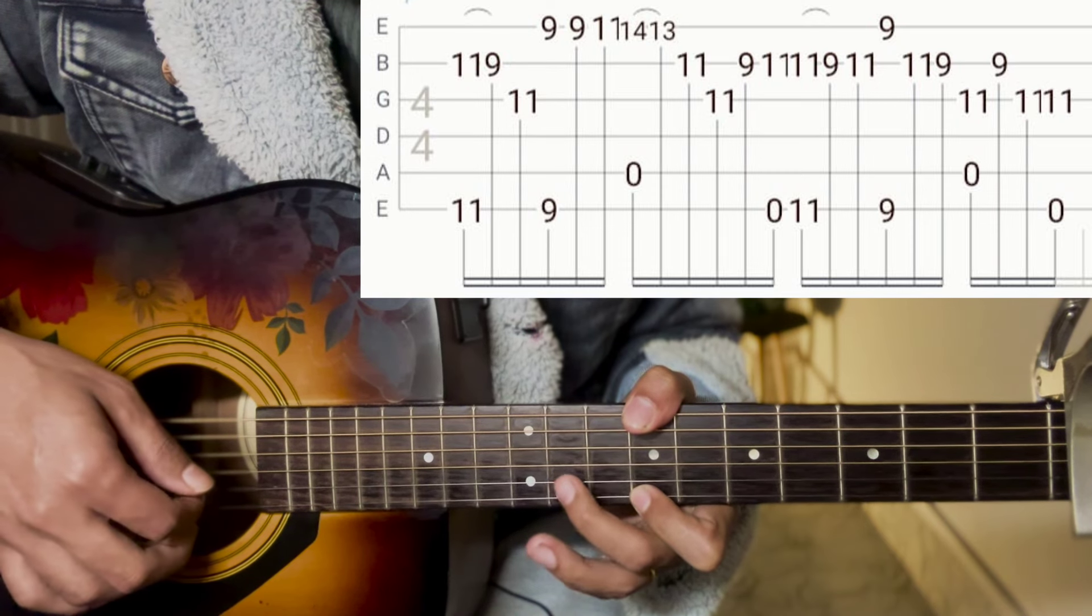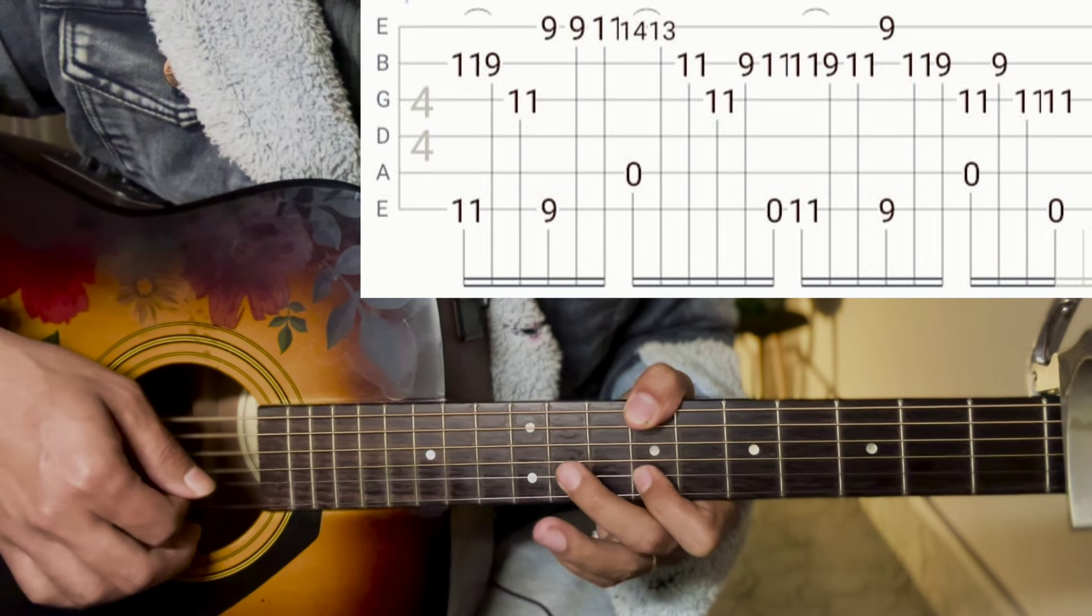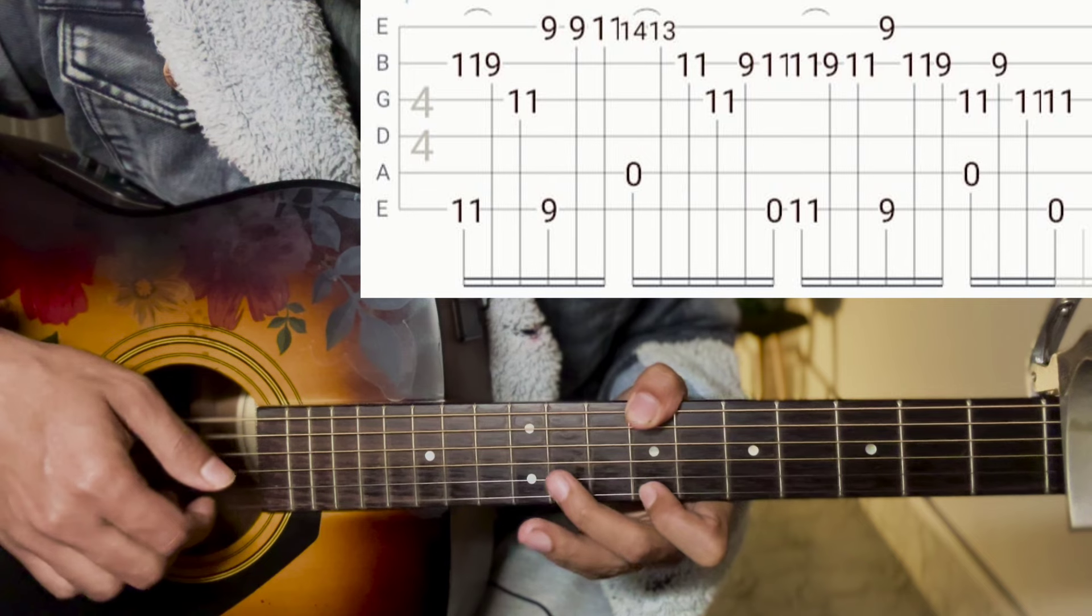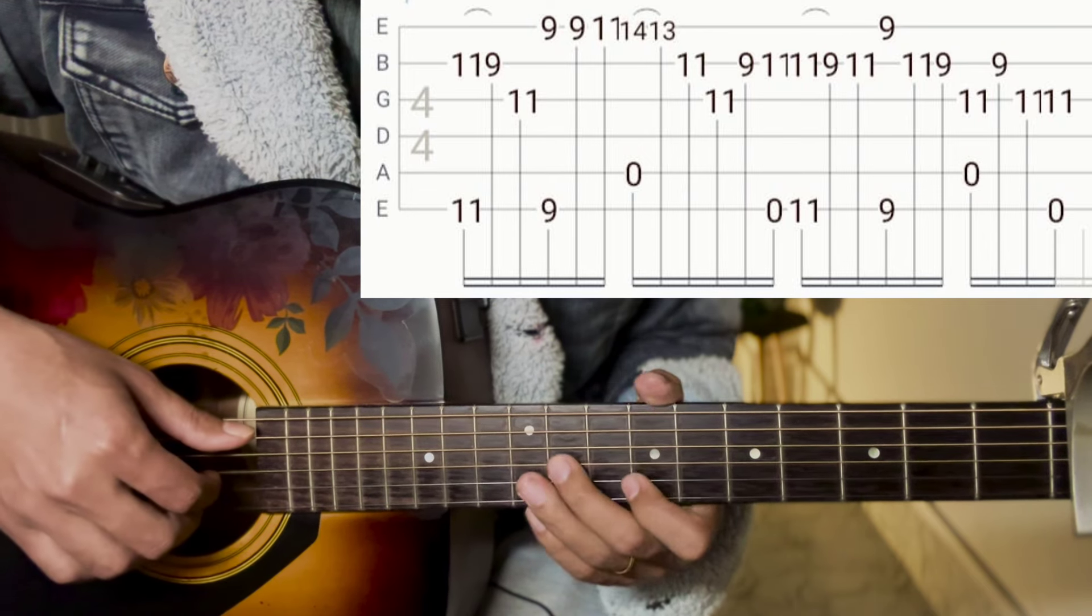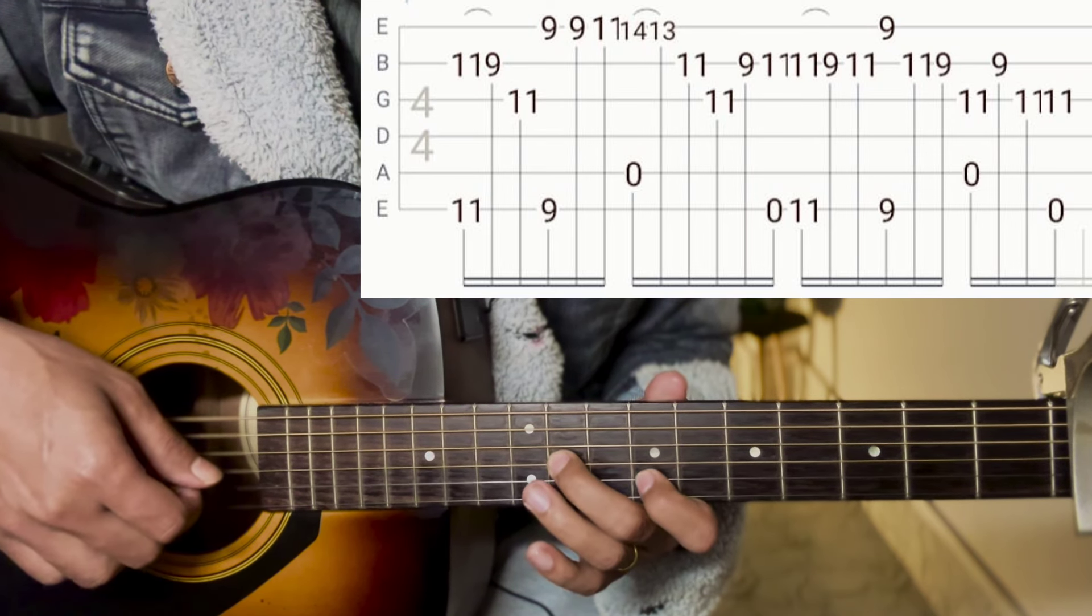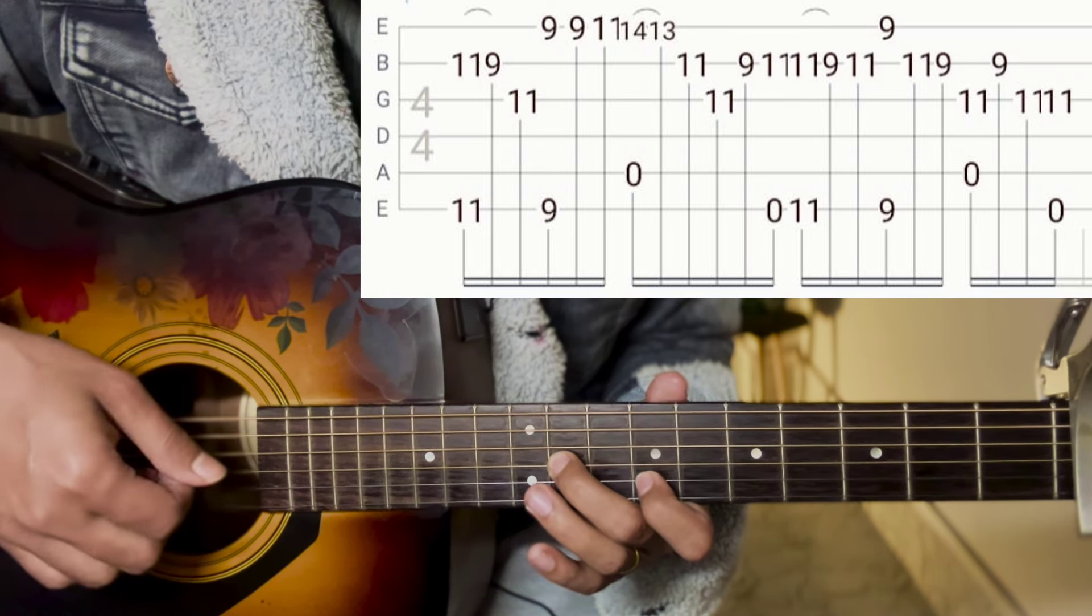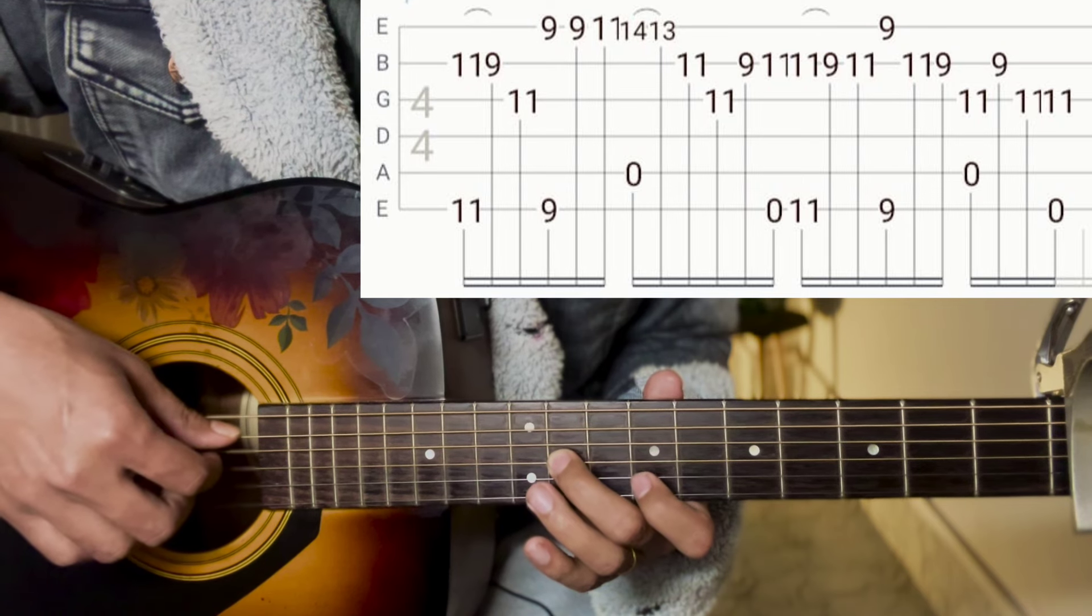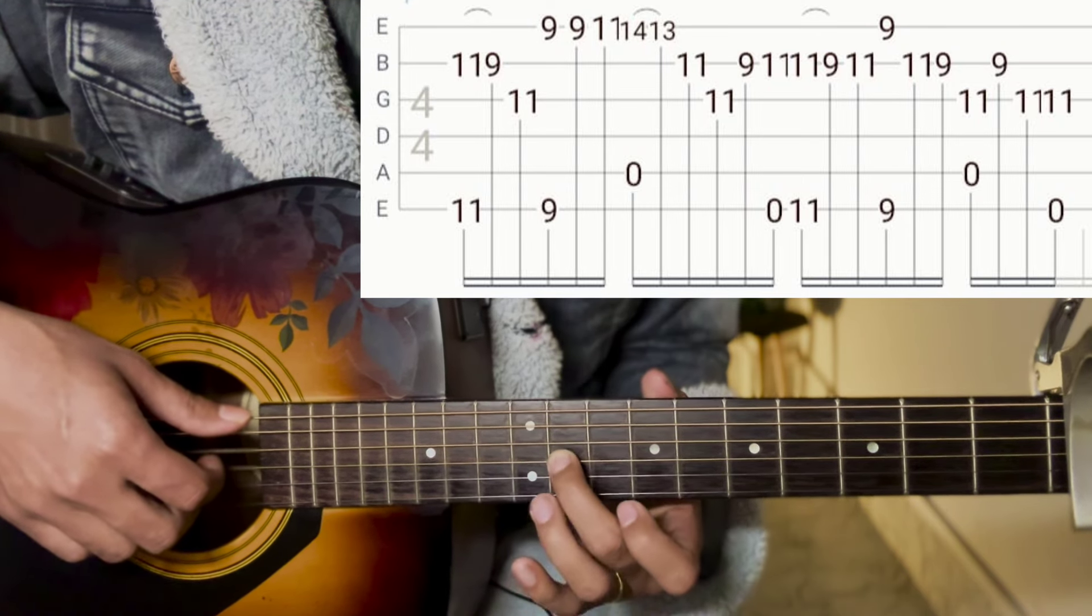2nd string 11, 9. After 5th string open, press the third string 11, then pick 2nd string 9, 3rd string 11. After 3rd string 11, press the 6th string open.